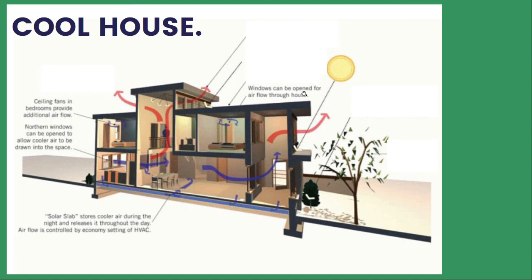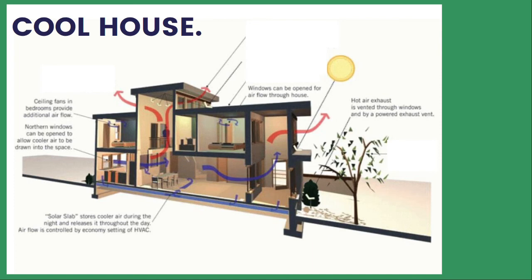Windows that can be opened allow airflow throughout the whole house — this flow is important because if you only have windows on one side, the flow is restrictive. Hot air is exhausted through vents in the windows, and can be released through little vents at the bottom of the windows. This is a case study from America where the sun is on the south, but in our context the sun is on the north.